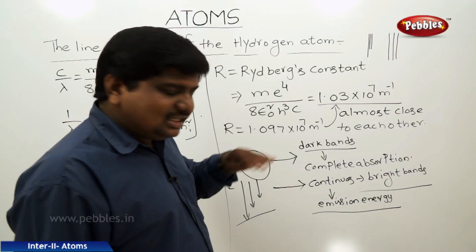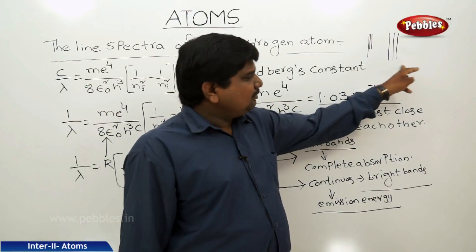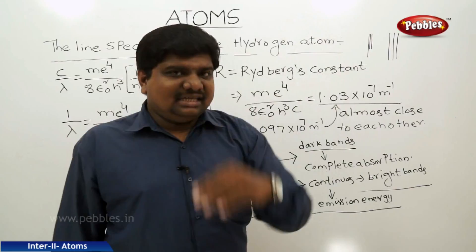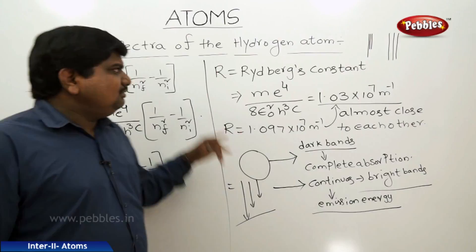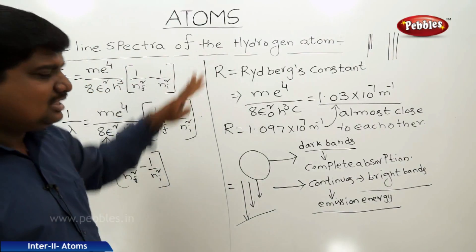The darkness at that spot means total energy was absorbed; brightness means total energy is released. This is how we understand the line spectra of the hydrogen atom. Now we will discuss one numerical based on this concept.